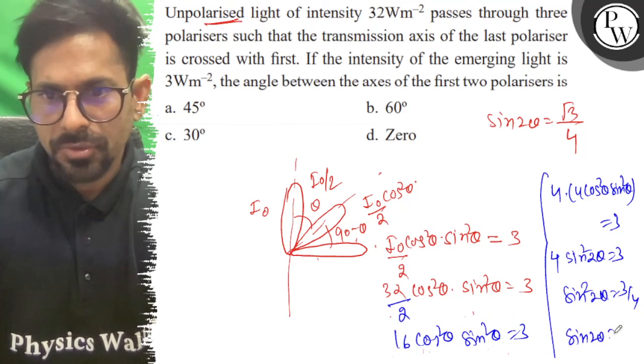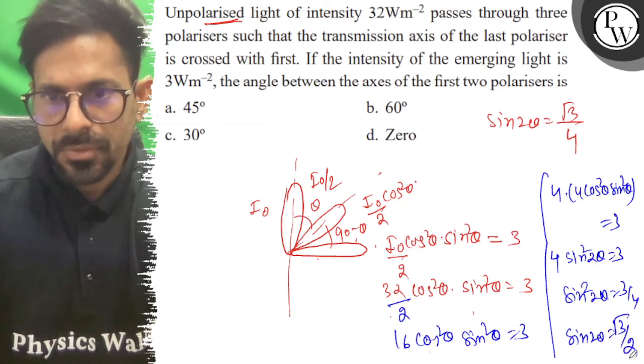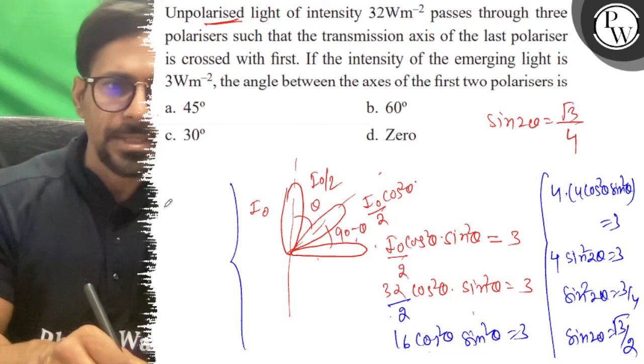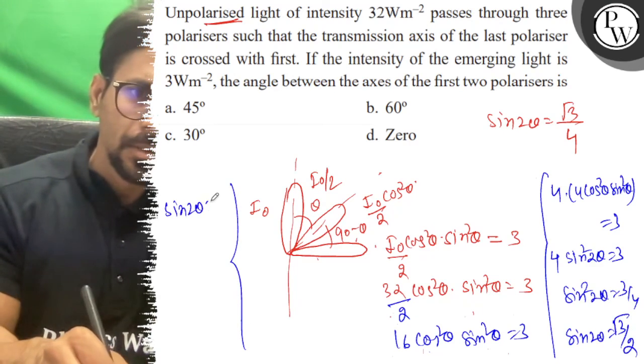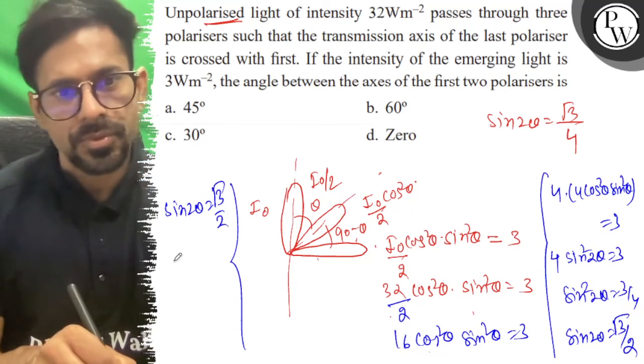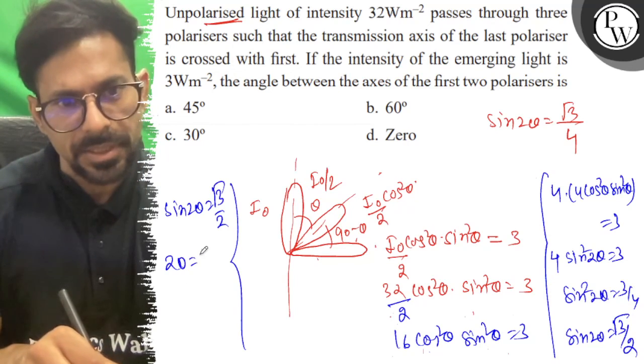So sin 2 theta equals root 3 by 2. That is root 3 by 2. So 2 theta equals 60 degrees, and theta equals 30 degrees.